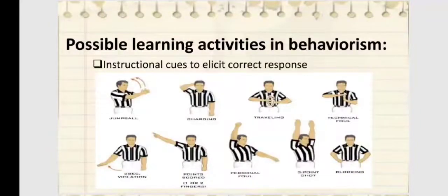And also, these are the possible learning activities in behaviorism. First is the instructional cues to elicit correct response. So here applies the signs in basketball, volleyball, where they have hand signs which have meanings, that someone did a behavior on the court itself.